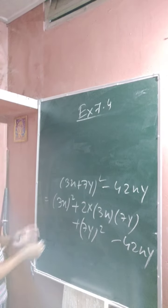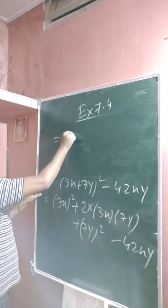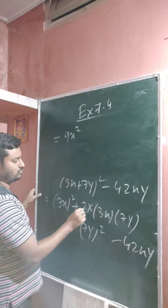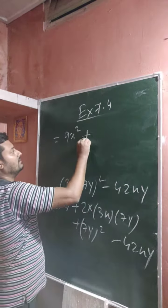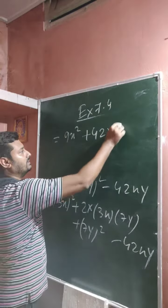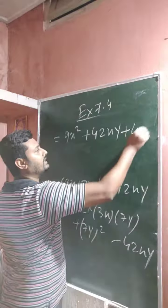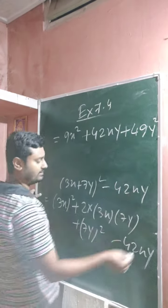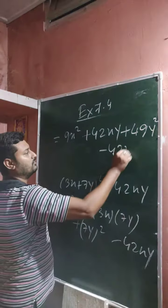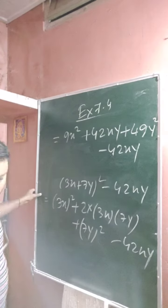So now 3x square is 9x square. 2 times 3 times 7 is 42, so plus 42xy. This one is 7y all square which is 49y square, and the remaining part is minus 42xy.